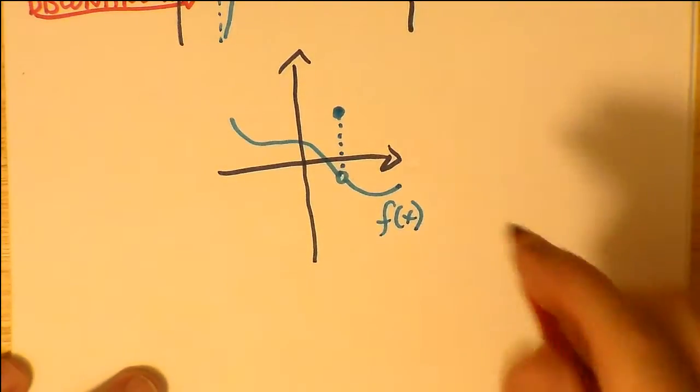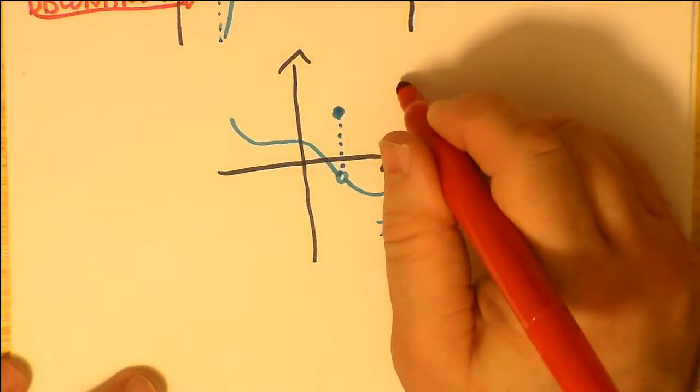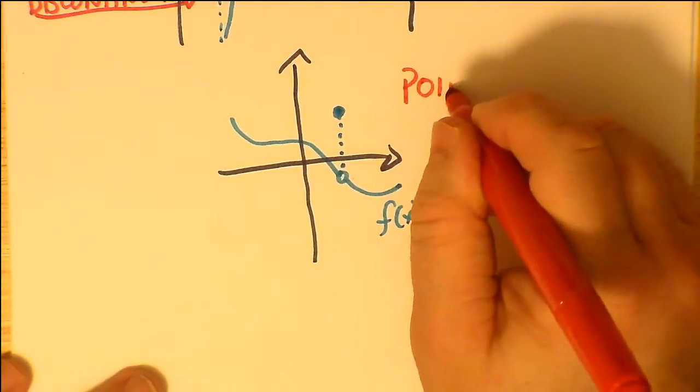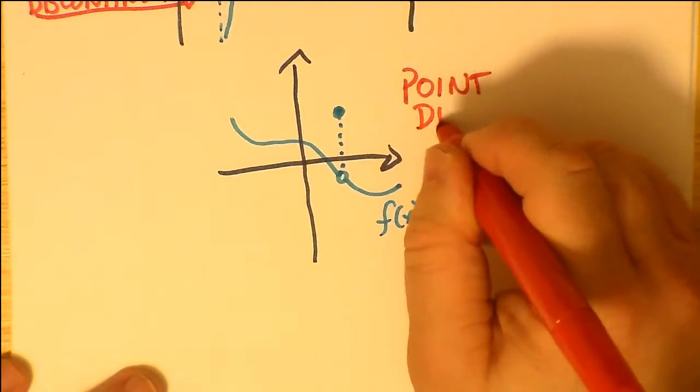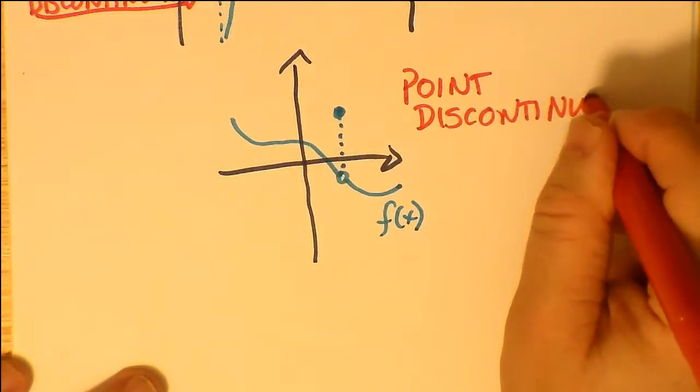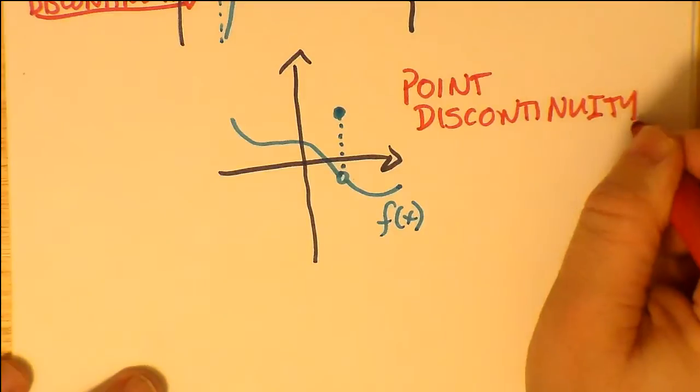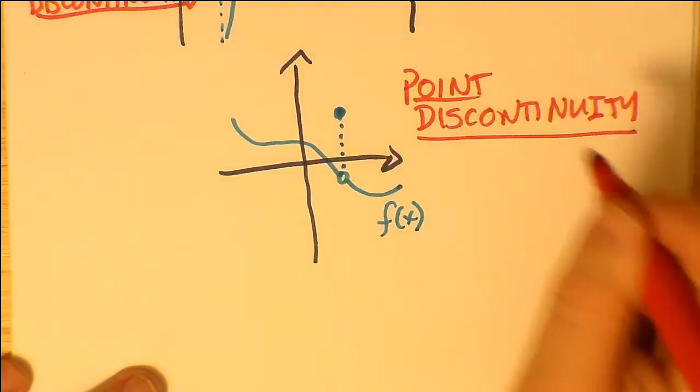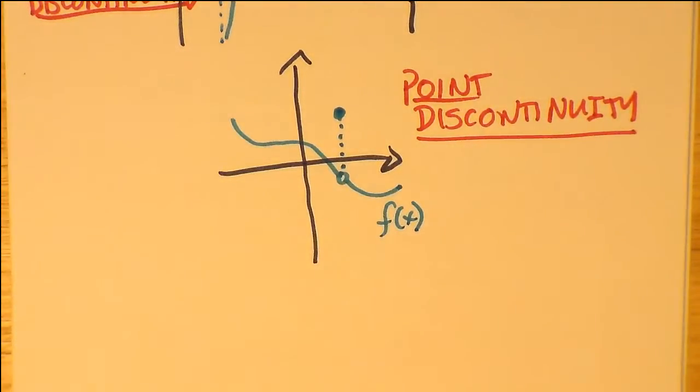Then there's one that gives every appearance of being continuous at a particular x value, except that it isn't actually. At that particular x value, there's a hole in the graph. That's called a point discontinuity, also known as a removable discontinuity.